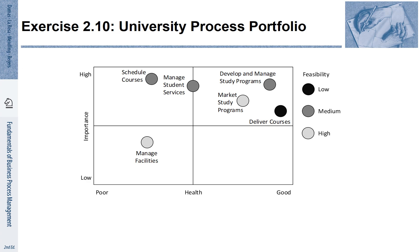How do we now select a specific process based on the criteria that we discussed? We can use process portfolios to help us take that decision. A process portfolio visually shows the different criteria and helps us to select the best process for improvement. In this picture, you see the example of a process portfolio of a university. The left-hand side axis shows the importance of the process.